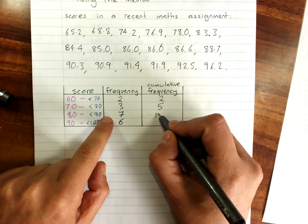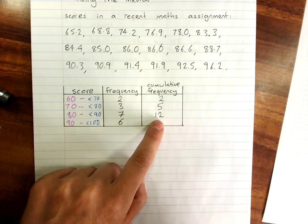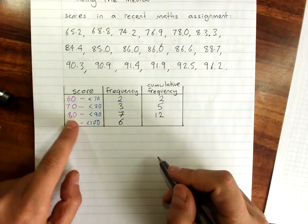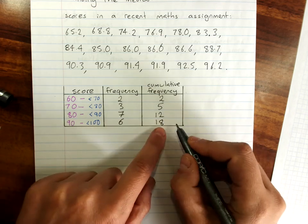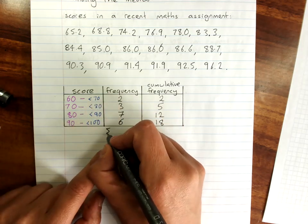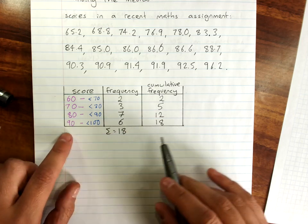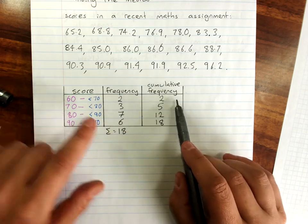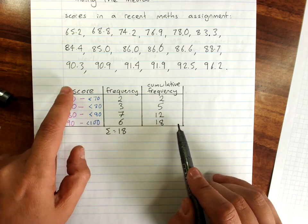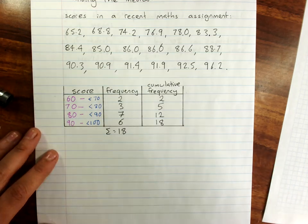Adding seven here gets me 12. So that says 12 students got scores of below 90. Adding six is 18. That says there were 18 students in the class in total, which we could check by adding that up. The sum is 18. Remember, capital sigma means sum total. And so that number and adding up this column should obviously always be the same. And that says 18 students got below 100%, or 18 students in total. So that's what the cumulative frequency column tells you.